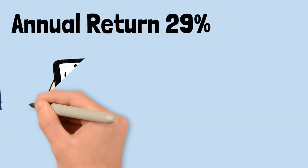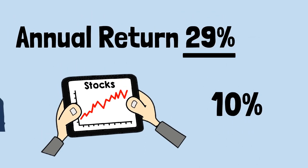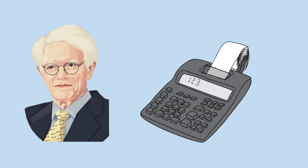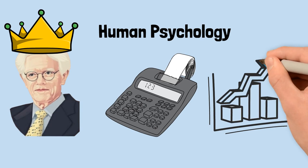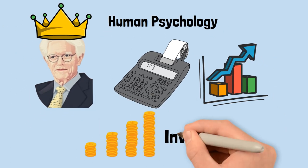Considering the average annual return of the stock market is 10%, 29% is an impressive consistent return. But Lynch isn't just a numbers man, he's a master of human psychology, a student of market trends, and a believer in the power of long-term investing.